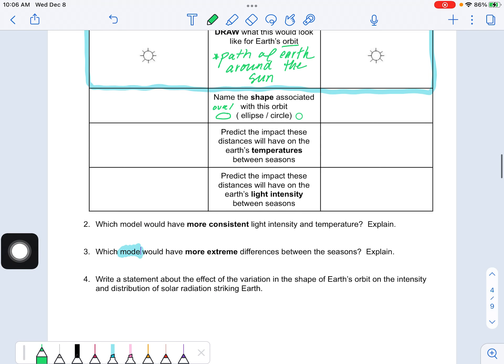So then you're just pulling your data together. Which model, A or B, is going to be more consistent? What makes you think that? And then same thing here, number three, which model, A or B, is going to be more extreme between the seasons? What makes you think that? Okay, so give a little explanation. Statement about effect of variation in the shape of orbit and the intensity of solar light hitting Earth. Pick one of them to talk about.